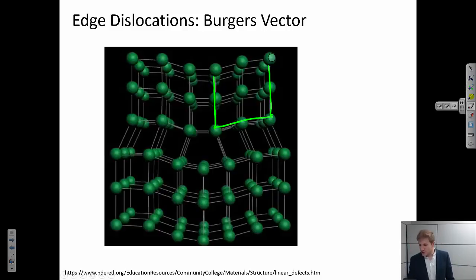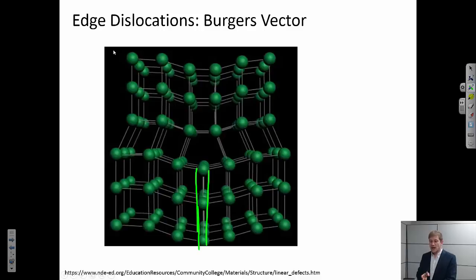So the first thing that we need to do is identify the dislocation itself, and if you look closely you see there's an extra half a plane of atoms here. Remember, the edge dislocation is the line, the linear defect that forms the boundary of that extra half a plane. So if I connected these three atoms in a line, that is the edge dislocation. It's a line extending into and out of the plane. The symbol for an edge dislocation looks like a T, where this lower prong of the T is pointing towards that extra half a plane of atoms.